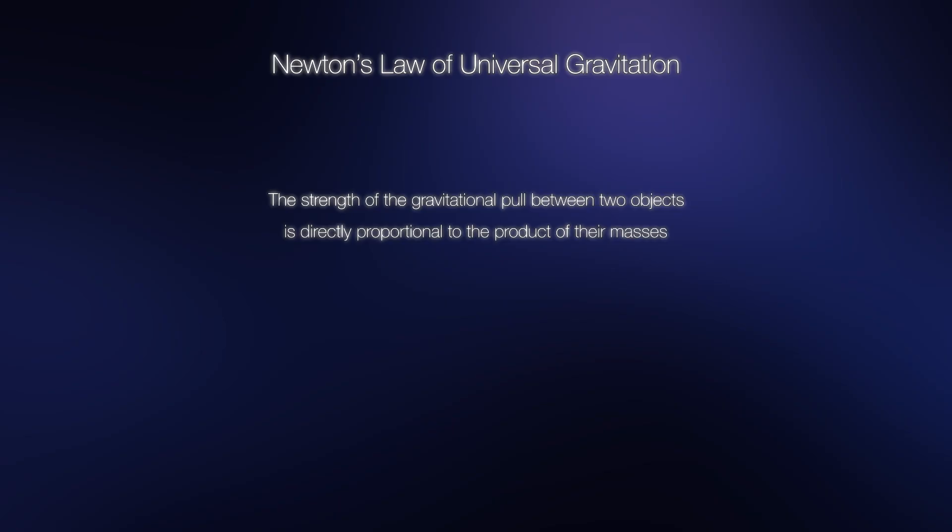This law is measured by the formula F equals G times M1 times M2 divided by D squared, where F is the gravitational force, G is the gravitational constant, M1 and M2 are the masses of the objects, and D is the distance between the centers of the two masses.